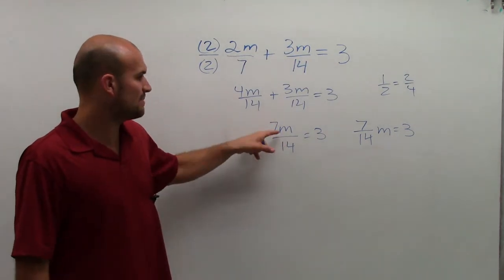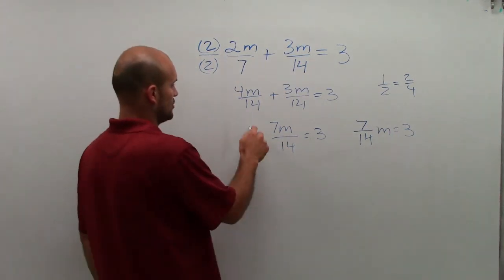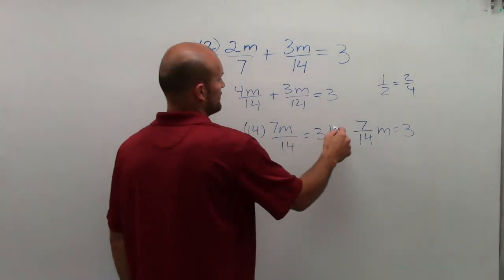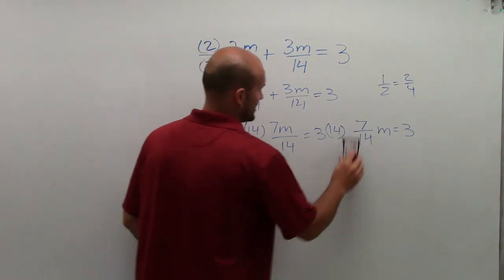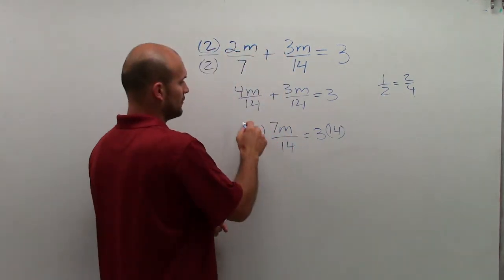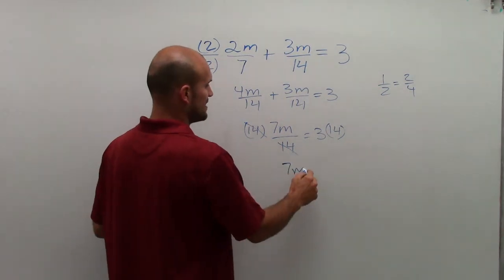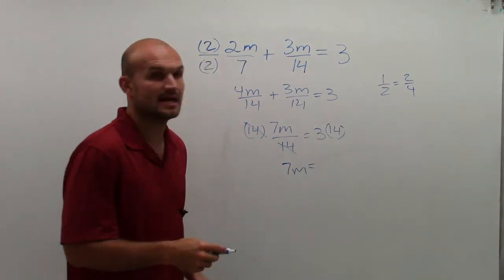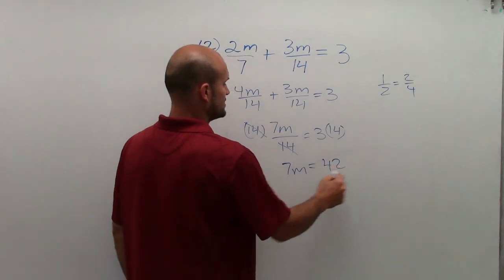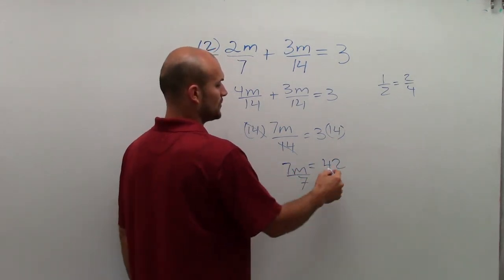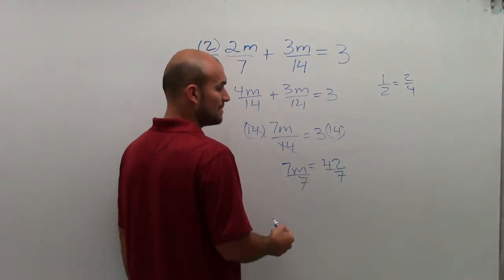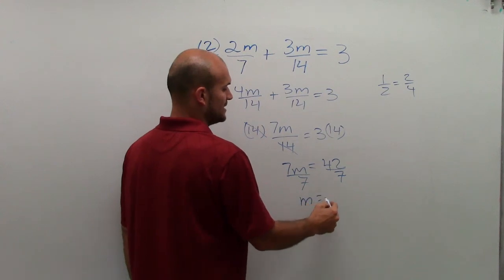So what I'm going to do is we could do it two different ways. Here, you could see, my variable is being divided by 14. So undo that by multiplying by 14. This is kind of getting in the way. So therefore, that will go to 1. 1 times 7m is just 7m equals 3 times 14, which is 42. Now, undo multiplication by dividing on both sides. So I get m equals 6.